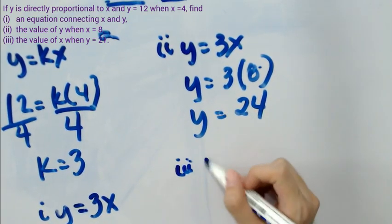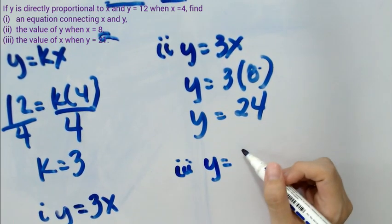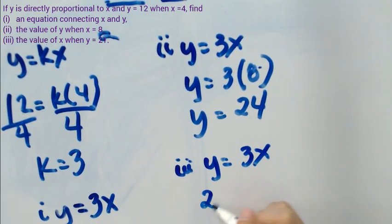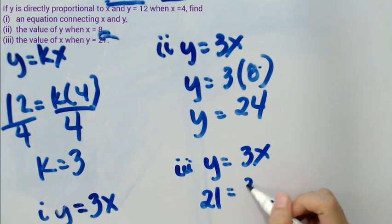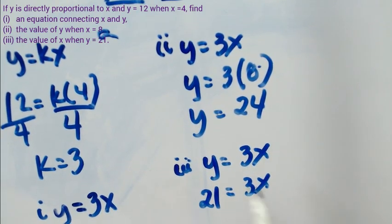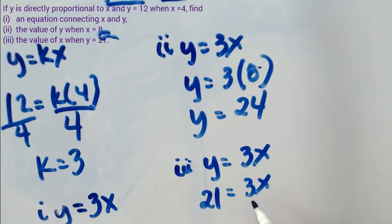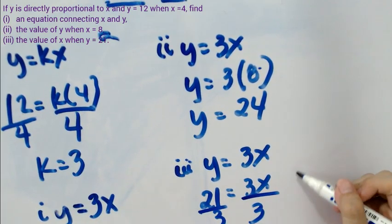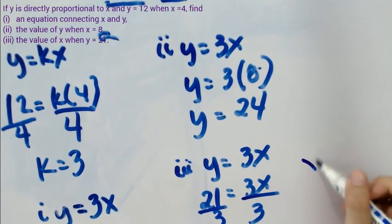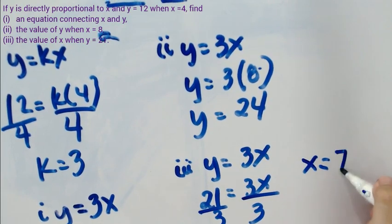We substitute y equals 21, so 21 equals 3x. To isolate x, we divide both sides by 3. Dividing both sides by 3 gives us x equals 7.